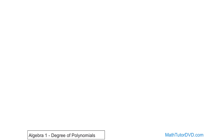It's easier to actually show you this rather than just talk about it. So if you had, for instance, negative 5 times x times y to the 4th power times z to the 3rd power — sometimes on a test you might be asked what is the degree of this. Now, this is really just a monomial because there's one term. The degree is basically the sum of the exponents.